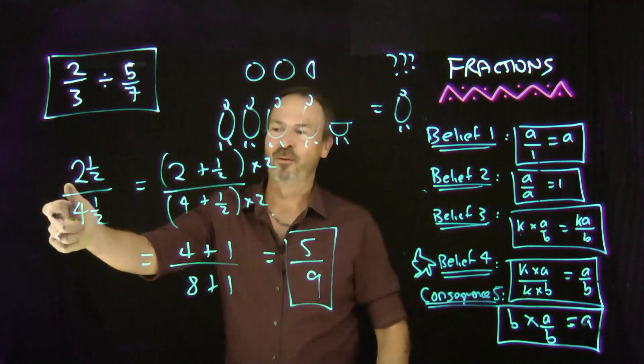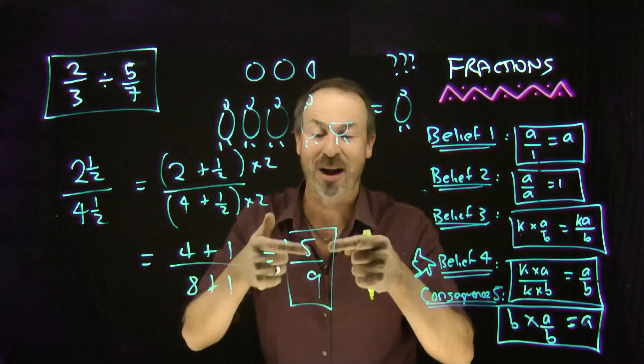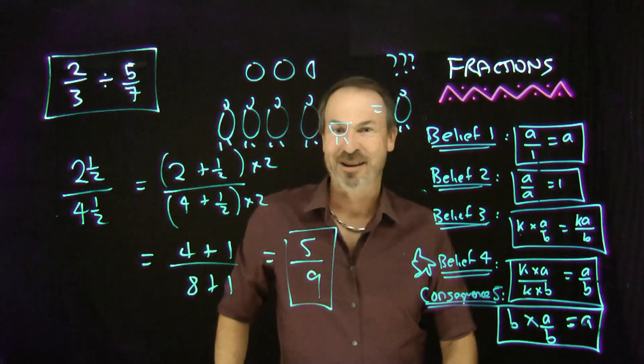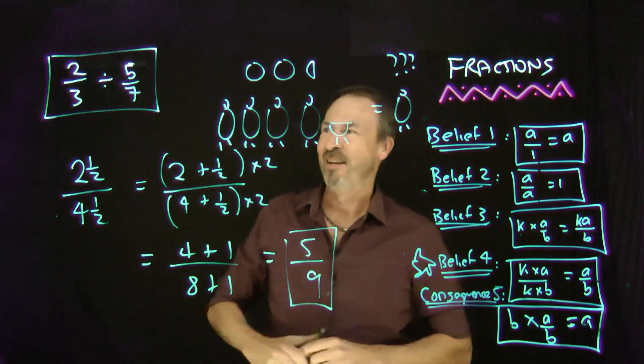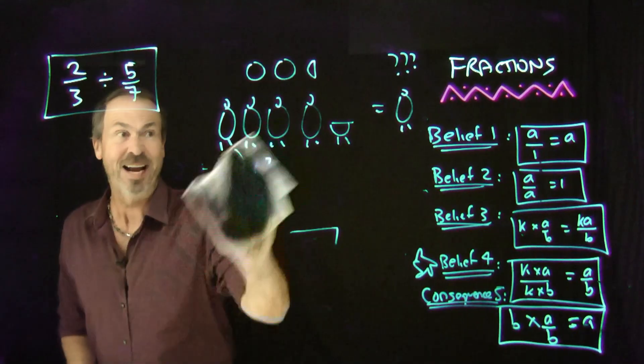Sharing 2 and a half pies for 4 and a half students, it's really the same as sharing 5 pies equally amongst 9 students. Each student gets 5 ninths of a pie. A little bit more than half a pie. Bingo. Beautiful. That dividing mixed numbers seems to be fabulously fine.